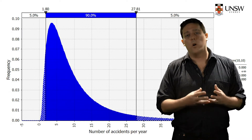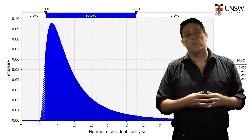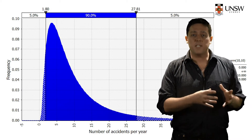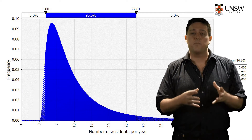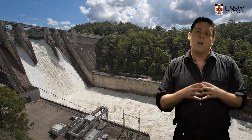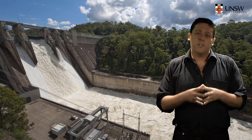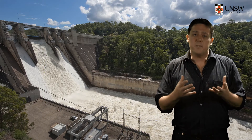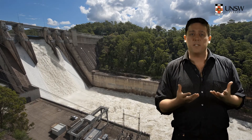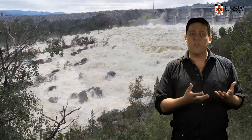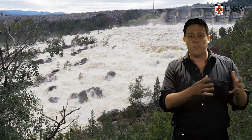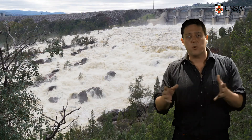In many real-world problems, we may need to consider multiple factors that can be best represented by a PDF. Imagine I wanted to determine the likelihood of Sydney's main water supply, Warragamba Dam, overflowing and leading to flooding in downstream places like Penrith, Richmond, or Windsor.